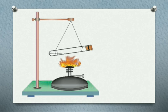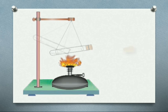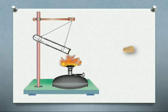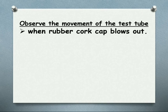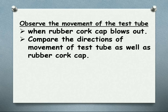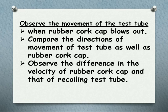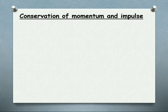Let us see the experimental setup. When we do it, the cap blows out in this direction. Let us check the directions of the test tube and the cap. When the rubber cork cap blows out, compare the directions of movement of the test tube as well as the cap. Observe the difference in velocity of the rubber cap and that of the recoiling test tube.